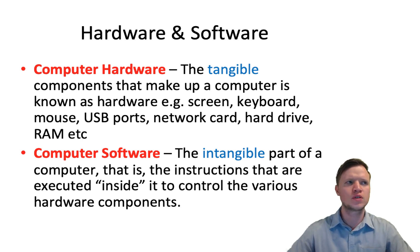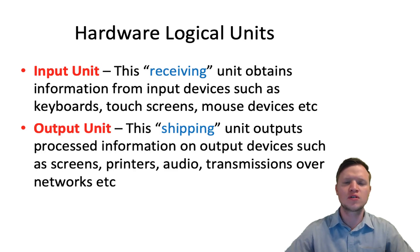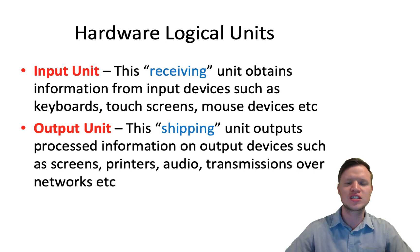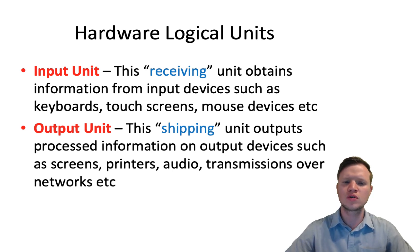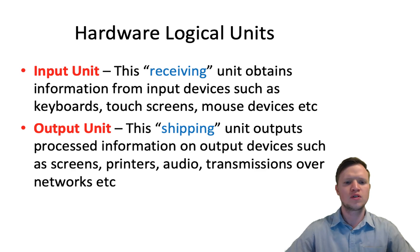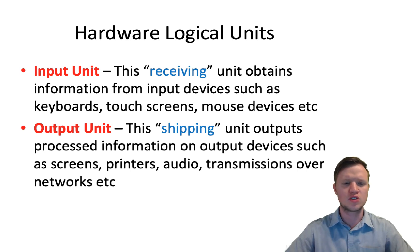A computer consists of six logical units. The first two units are the input unit, which is our receiving unit, and the output unit, which is more or less our shipping unit. Input includes, for instance, the keyboard, the mouse, or a camera where there's input into the computer. The output will be the screen, a printer, or a projector. So there's input and there's output.